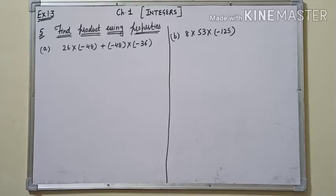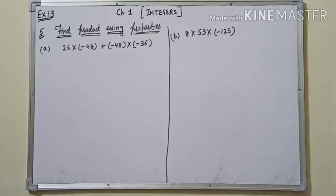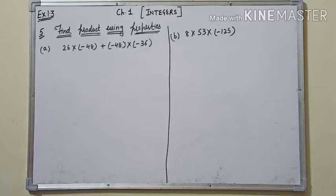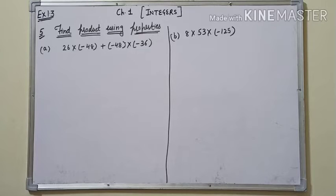Question number 5: Find products using properties. Why do we use properties? So that our calculations will be easy — we don't have to do big multiplications. We use distributive properties: we take common terms, then we add or subtract to make numbers like 100, 1000. One method is suitable rearrangement — we arrange numbers so multiplication by 10, 100, 1000 becomes easy.